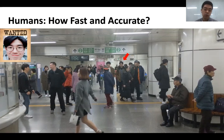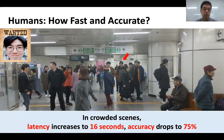Our user study actually shows that even for young college students with sharp cognitive abilities, it takes as high as 16 seconds to find a target in a crowded scene. And the accuracy drops to 75%.